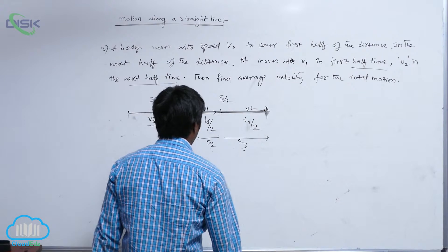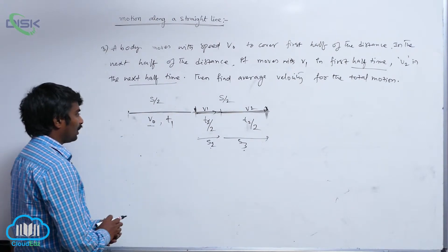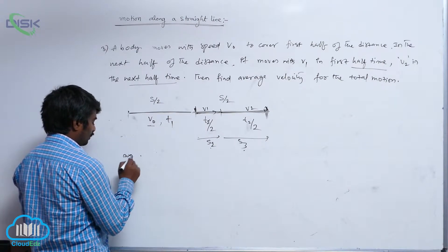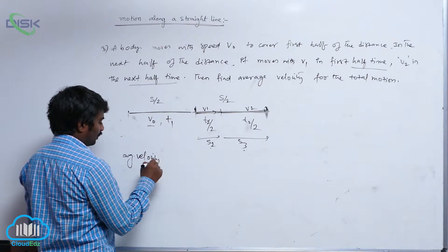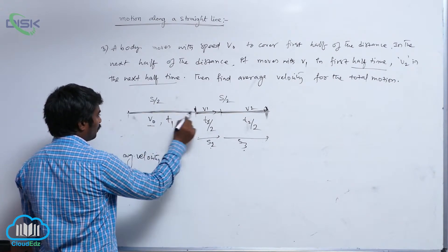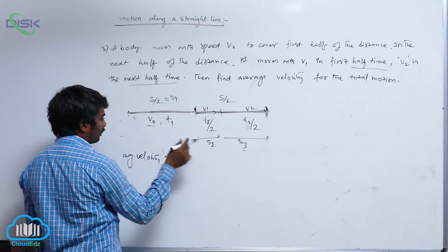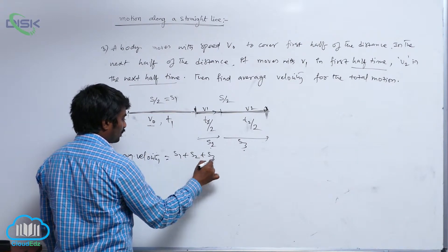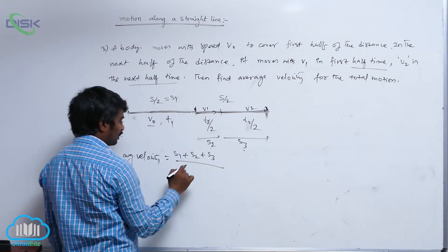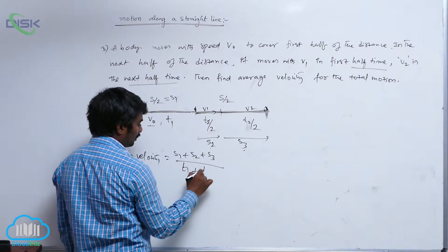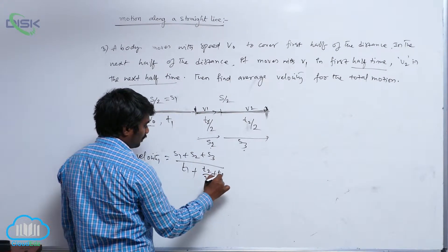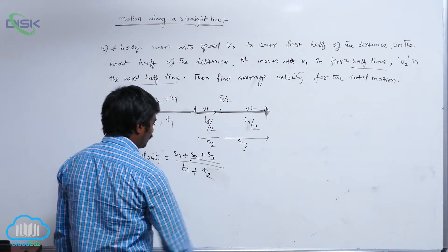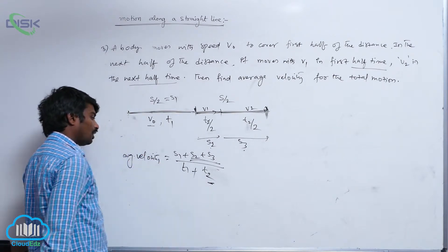Now we have to calculate average velocity. Average velocity equals s1 plus s2 plus s3 divided by the total time taken, which is t1 plus t2. Note that s2 plus s3 equals S/2 and is covered in time t2.